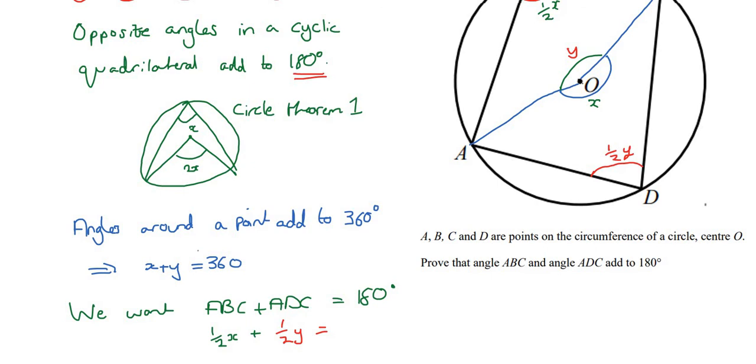And this is equal to, hopefully you can see from this equation here, let's call it one. This is equal to a half X plus Y. And X plus Y is just 360. So it's equal to a half 360, which equals 180 degrees. So that's by equation one there.